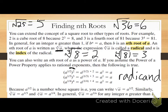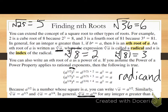The fifth root of a can be rewritten as a to the one-fifth. The sixth root of a is a to the one-sixth. The seventh root is a to the one-seventh. The hundredth root of a is a to the one-hundredth power. So in general — write this down — the nth root of a equals a to the one-over-n power, for any integer n greater than one. If I have a radical, I can rewrite it using a rational exponent by putting one over my index.